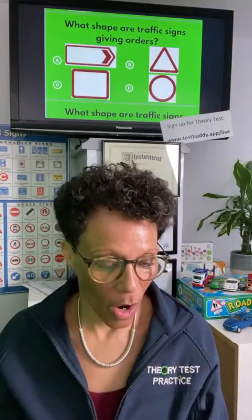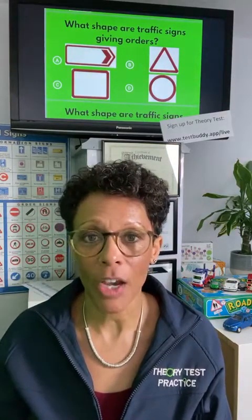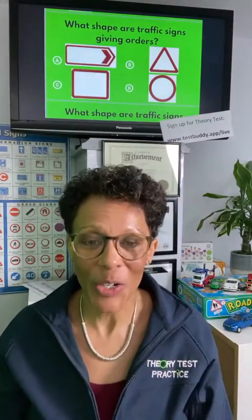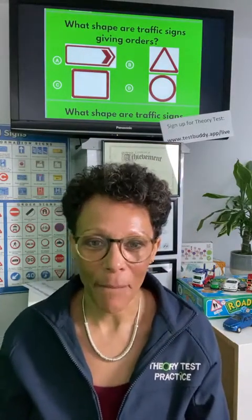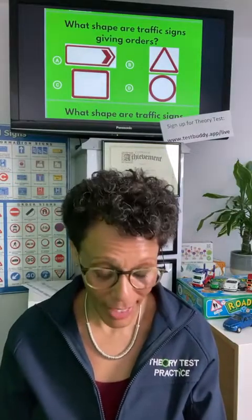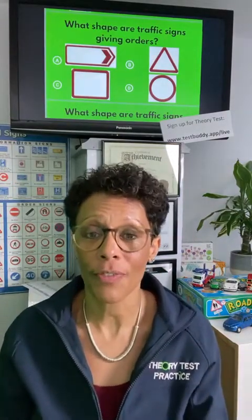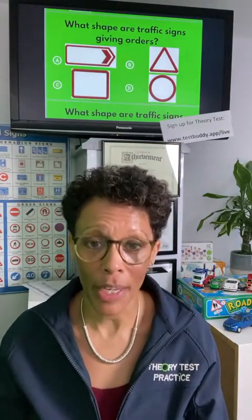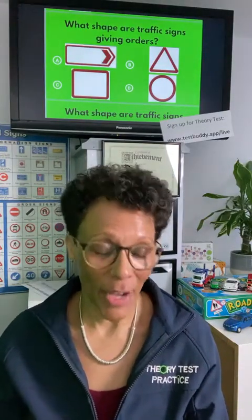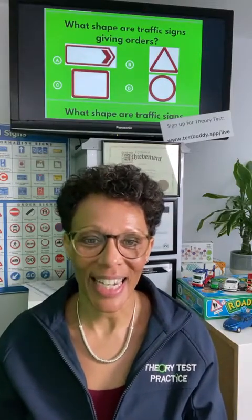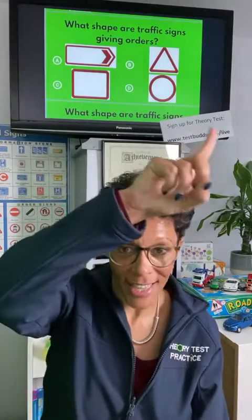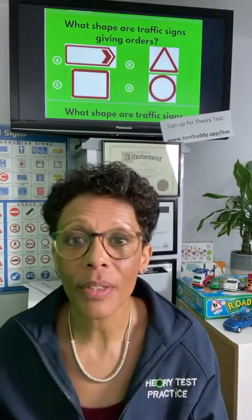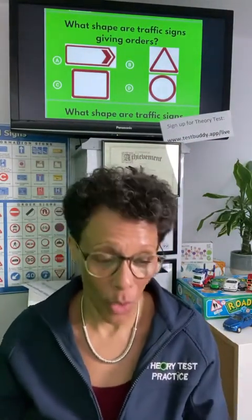Next question: which shape are traffic signs that give orders? If you know the shapes of signs, you can answer lots of theory test questions. I cover them all in my course — you can see it at testbuddy.app/live. Circular signs give orders. You can easily remember that by making a circle with your hands — you can see the shape of an O for order.